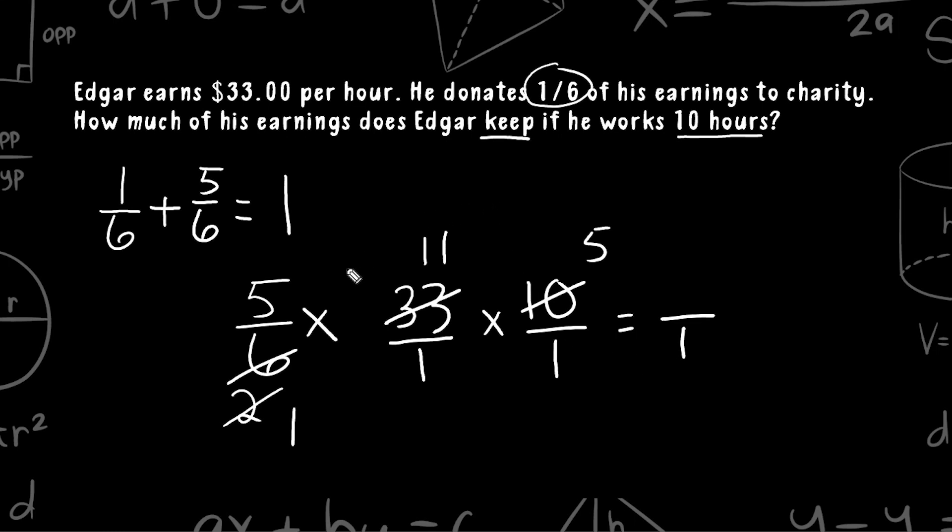So I'm going to start with 5 times 5, which is 25, and 25 times 11 is 275. And of course, 275 divided by 1 is exactly 275. So that is the amount that Edgar would get to keep for himself after donating the other sixth of his earnings to charity.